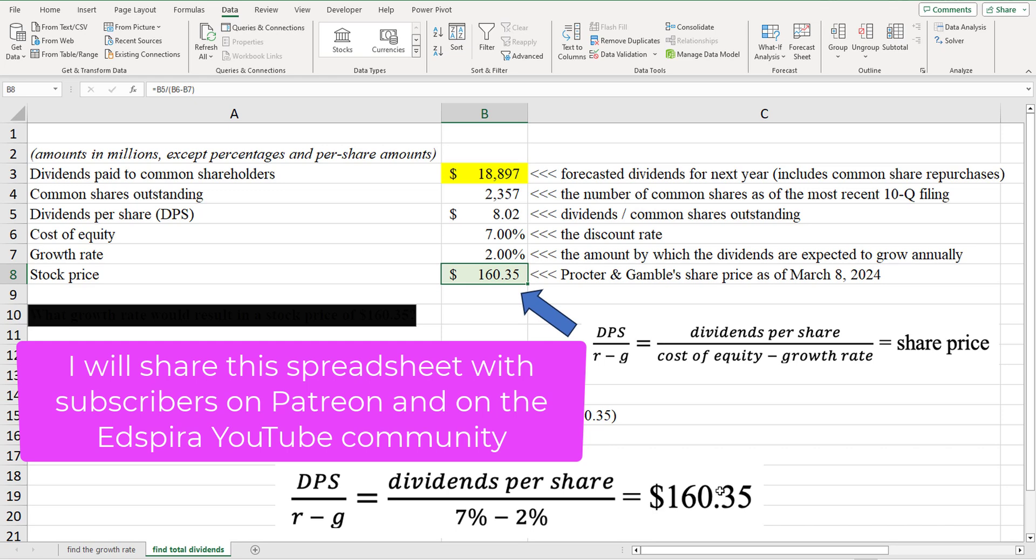We say, we observe the share price. We know the cost of equity. We're fairly confident about what people are expecting for the growth rate. We can reverse engineer using all these components and say, OK, what must the market be assuming dividends per share will be next year to arrive at this share price?